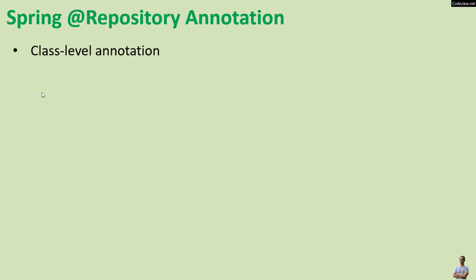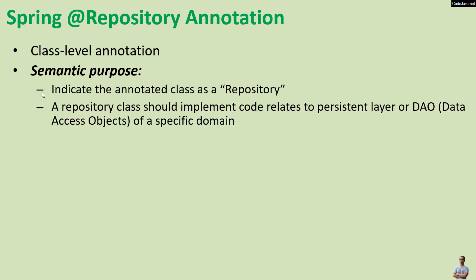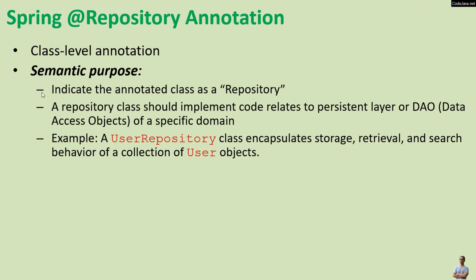The @Repository annotation is a class-level annotation, which means it must be used at class level only. The semantic purpose of using the @Repository annotation is to indicate the annotated class as a repository. A repository class should implement code related to the persistent layer or DAO (Data Access Objects) of a specific domain — for example, a user repository class encapsulates storage, retrieval, and search behavior of a collection of user objects.